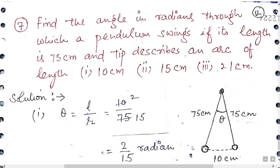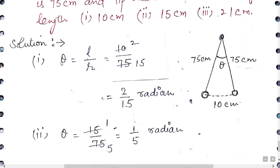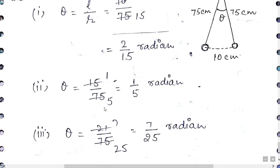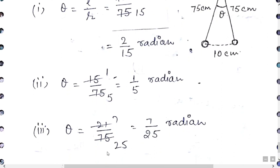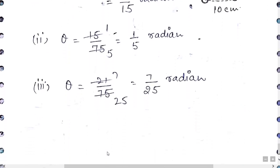Question number 7: Find the angle in radians through which a pendulum swings if its length is 75 cm and the tip describes arcs of 10 cm, 15 cm, and 21 cm. Using θ = l/r: for 10 cm, θ = 10/75 = 2/15 radian; for 15 cm, θ = 15/75 = 1/5 radian; for 21 cm, θ = 21/75 = 7/25 radian.